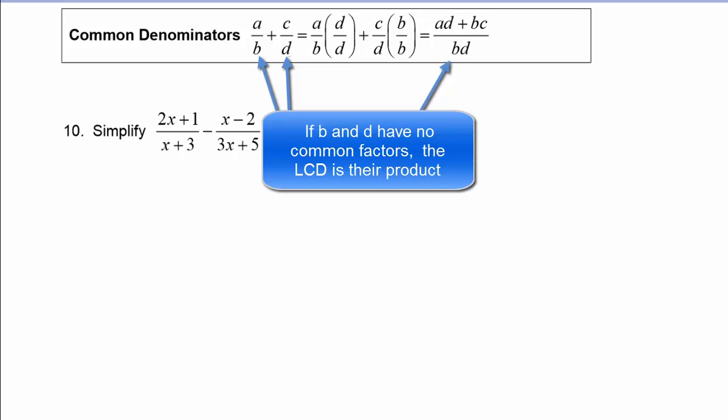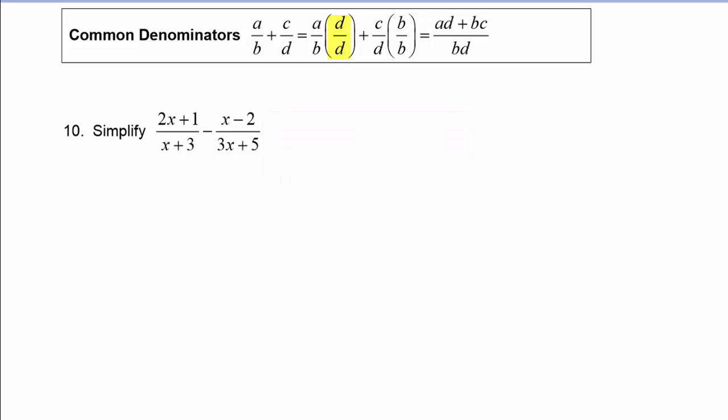We have to get a common denominator, and our common denominator would be b times d. So the first fraction is missing d in the denominator, so we're going to multiply by one in the form of d over d. The second fraction is missing the b in its denominator, so we'll multiply it by one in the form of b over b. And when we do the multiplication and add up, we get ad plus bc over bd.